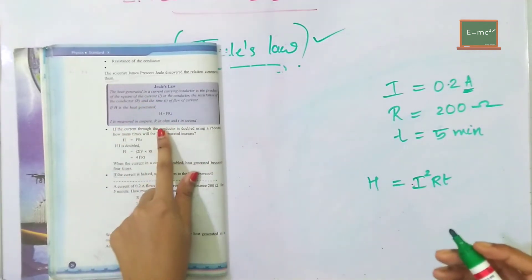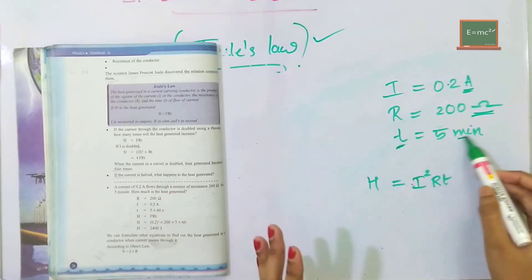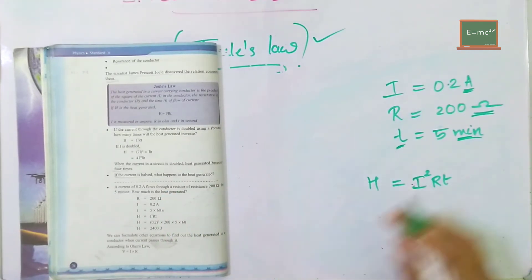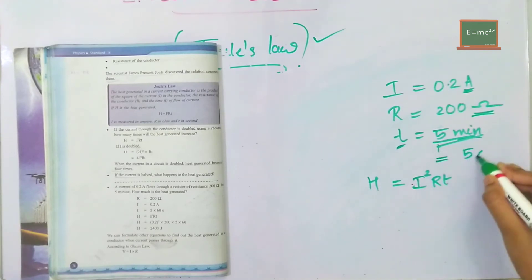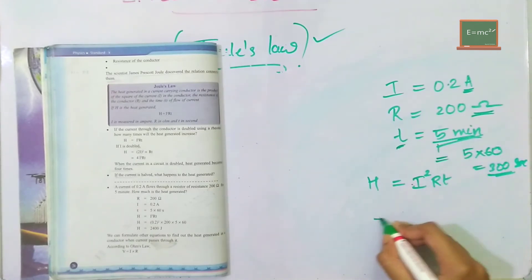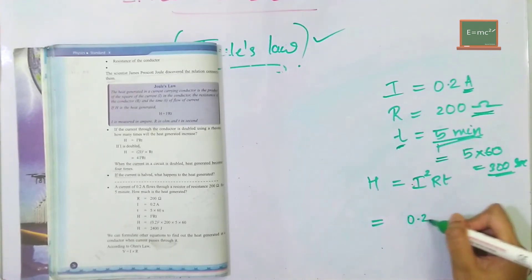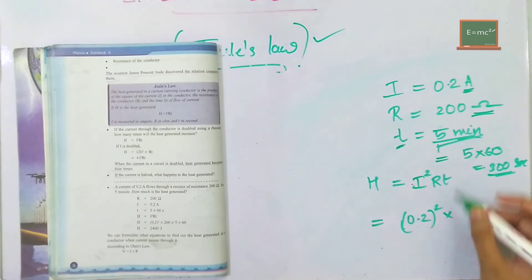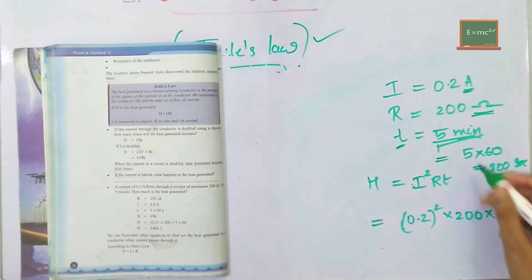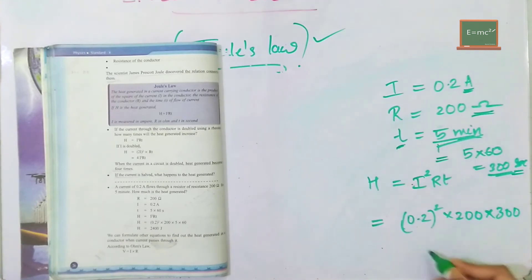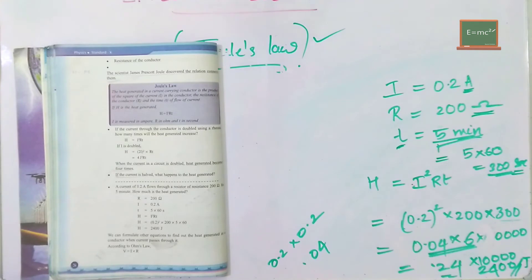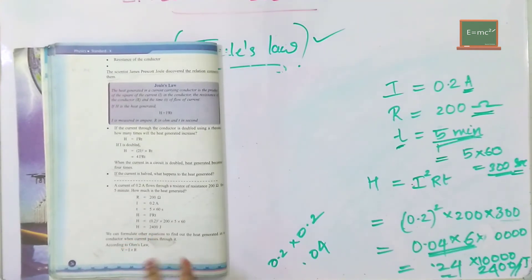The current I is 0.2A, resistance R is 200 ohm, and time is 5 minutes. We need to convert time to seconds. 1 minute is 60 seconds, so 5 minutes is 300 seconds. Using the equation H is equal to I squared R T, substituting: H equals 0.2 squared into 200 into 300. That gives us 24 joules as the answer.